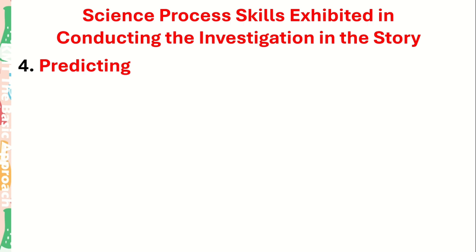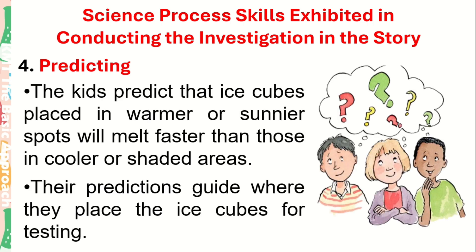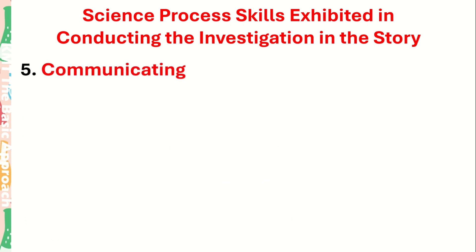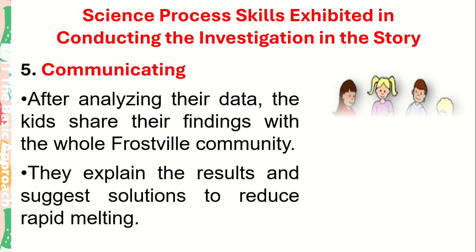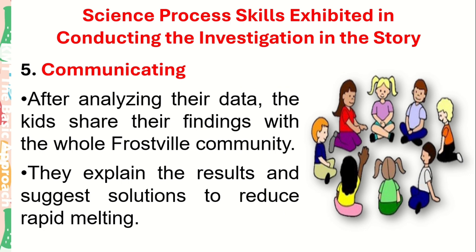Number 4 — Predicting: the kids predicted that ice cubes placed in warmer or sunnier spots will melt faster than those in cooler or shaded areas, and their predictions guided where they placed the ice cubes for testing. Number 5 — Communicating: after analyzing their data, the kids shared their findings with the whole Frostville community, explaining the results and suggesting solutions to reduce rapid melting.